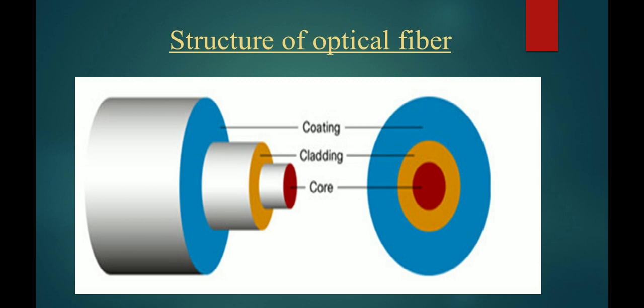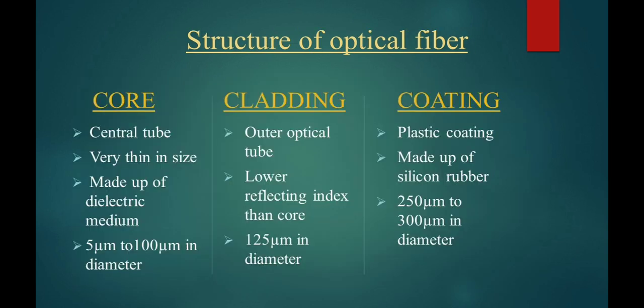So then we discuss about the structure of optical fiber. Optical fiber made up of three layers. First one is core, second one is cladding and third one is outer coating. The core is the innermost part that is made out of glass or transparent plastic. It is extremely thin, flexible and has a cylindrical shape which diameter is 5 micrometer to 100 micrometer.